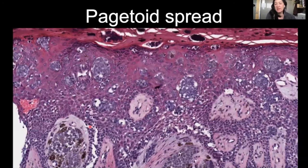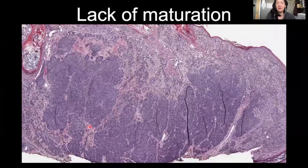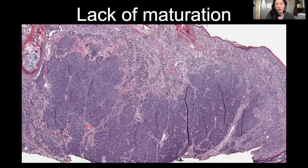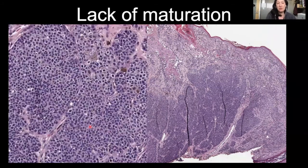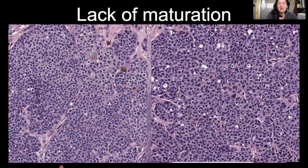Pagetoid spread is upward extension of single cells or nests of melanocytes above the dermal-epidermal junction. Generally, the higher they go, the more worrisome, with some exceptions. Lack of maturation — this is an example of a nevoid melanoma. You can see there are large atypical nests that extend and span the breadth of this lesion. Looking at the cytology at the top of the lesion, these melanocytes are large, plump, epithelioid, and at the base they're almost indistinguishable — so the melanocytes are not getting smaller with increasing dermal depth.